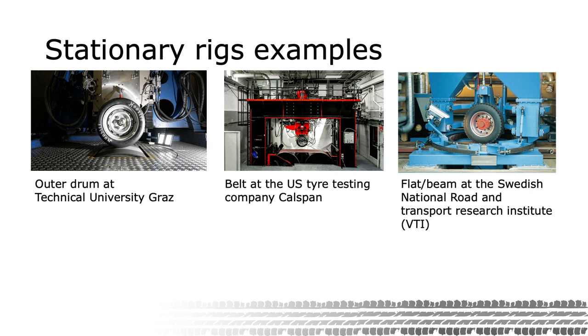Here we can see three examples of the different types of stationary test rigs. An outer drum rig at the Technical University of Graz in Austria. A belt rig at the US-located tire testing company Calspan. A beam-based machine at the Research Institute VTI in Sweden.